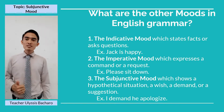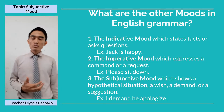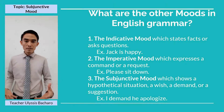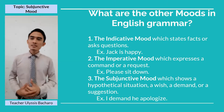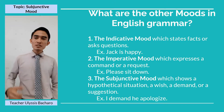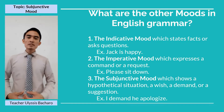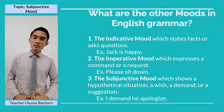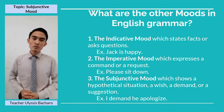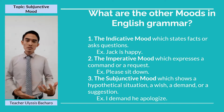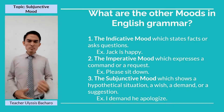The indicative mood states facts or asks questions. For example, 'Jack is happy,' or 'Is Jack happy?' And for the imperative mood, it is an expression of a command or a request. For example, 'Please sit down,' or you can also use it with disgust, such as 'Leave me alone.'